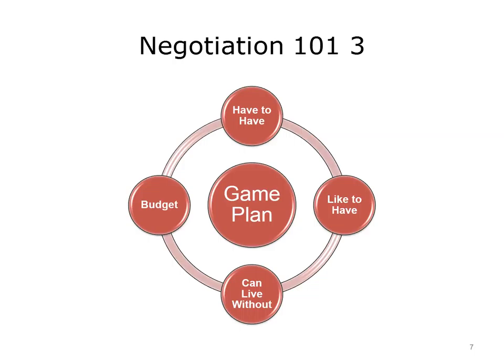Have a written game plan before the negotiation begins. As you go through the evaluation stage, you should be defining the things that you have to have — the reason you are purchasing this software product is to do several key functions. Document those. Know what you have to have, what you would like to have, and keep a running file of both. Also know what you could live without, and know what your budget is or what you can afford.